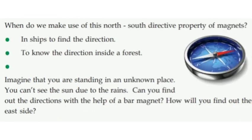When do we make use of this north-south directive property of magnets? In ships to find the direction, and if you don't know the direction inside a forest. You can use a compass. Imagine that you are standing in an unknown place and you can't see the sun due to the rain — can you find out the directions without the help of a bar magnet? How will you find out the east side?